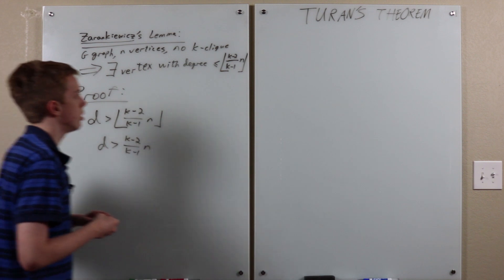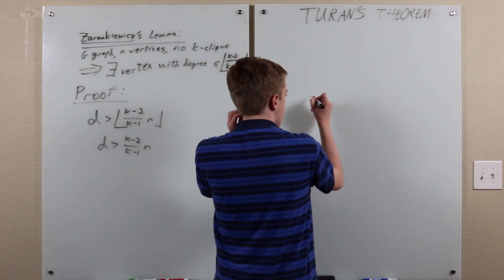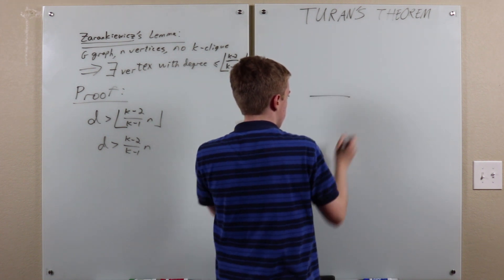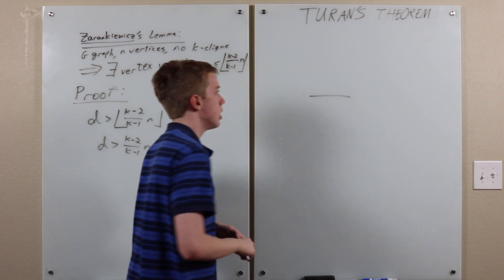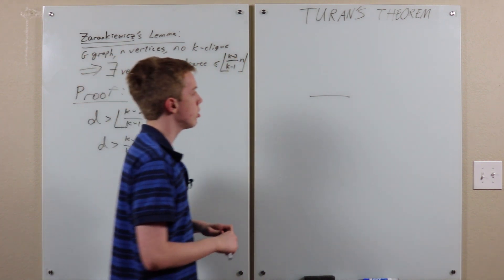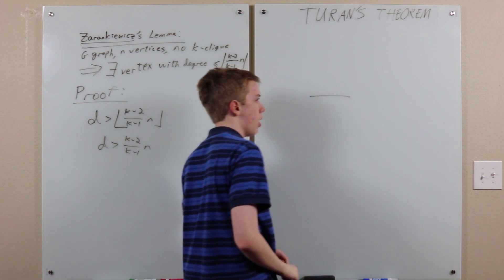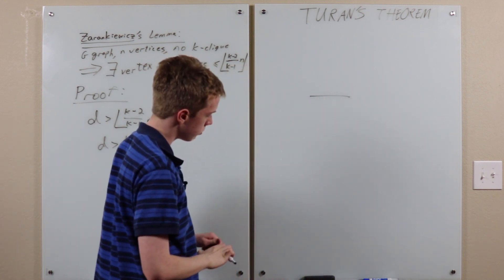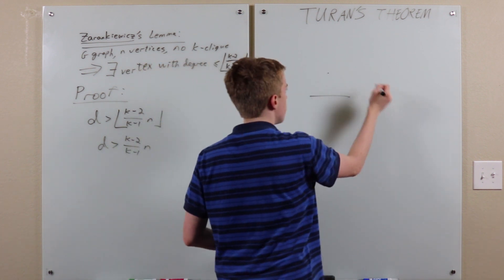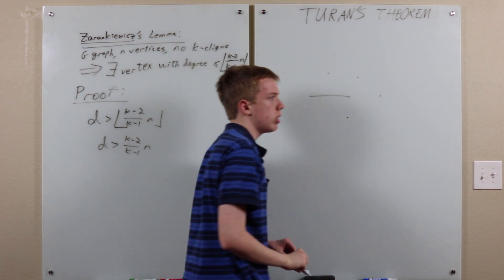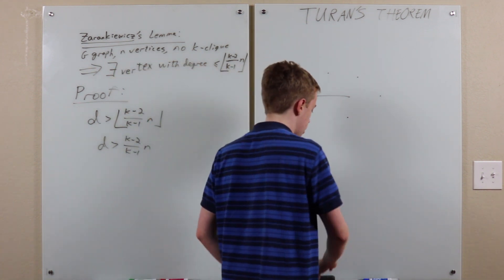pick a vertex and pick one of its neighbors. It must have a neighbor, otherwise it would have degree zero. Now, how many vertices are left over for us to count when we're counting neighbors? So, let's try to just build a k-clique, basically in as stupid of a way as possible. Just building on one vertex at a time.